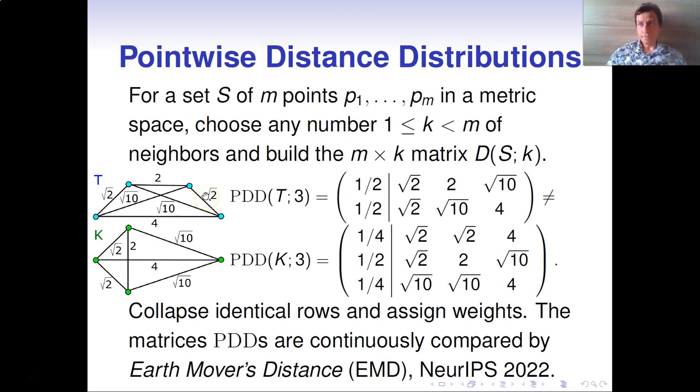The top right vertex due to symmetry accidentally has the same distances to two neighbors. That's why it's convenient to collapse these two identical rows into a single one and assign the weight 50%. Initially, these two point clouds of four points were not distinguishable by six pairwise distances, but the new invariant PDD is stronger. The matrices are different, and what is more important, they can be continuously compared by earth-movers distance, considering these matrices as weighted probability distributions.